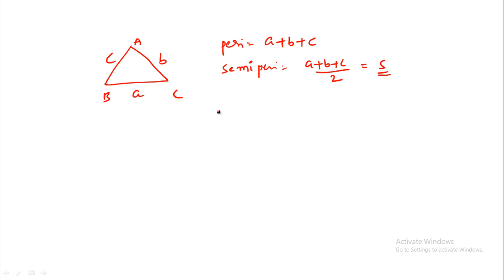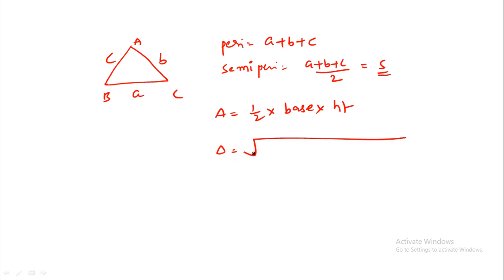The area of a triangle is 1/2 times base times height. Another area formula is Heron's formula: area equals the square root of s(s−a)(s−b)(s−c), where s is the semi-perimeter. This is used when all three sides are known.